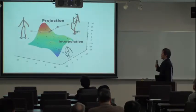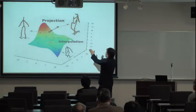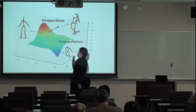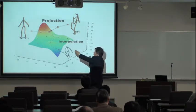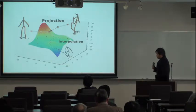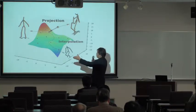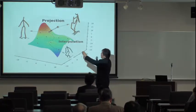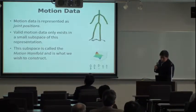Using the motion manifold, we can do projection: if we have corrupted data from sensor noise, we can project it onto the manifold and convert it to natural-looking human motion. We can also do interpolation — given two different poses, we can naturally interpolate them on the manifold so the in-between poses also look natural. Additionally, we can calculate distances between different motions more accurately over the manifold than in Euclidean space.